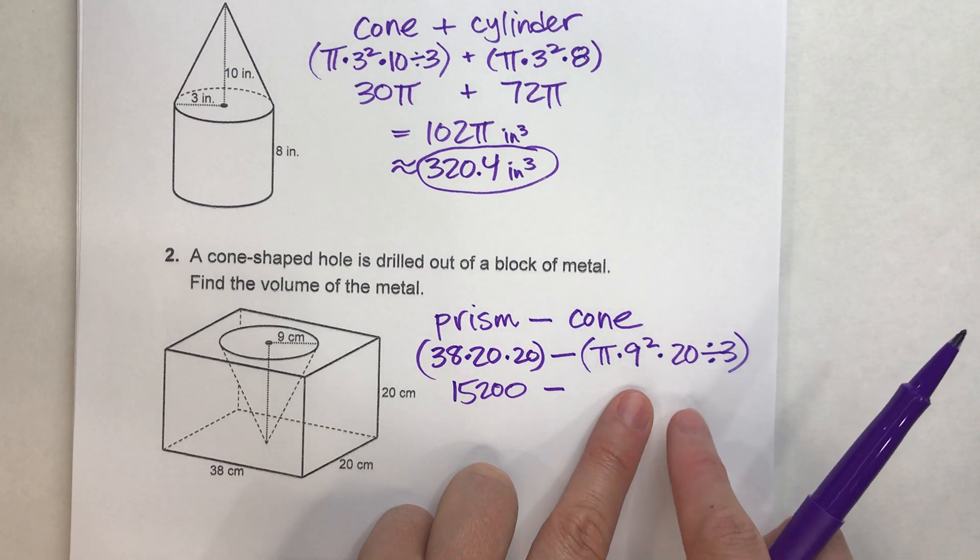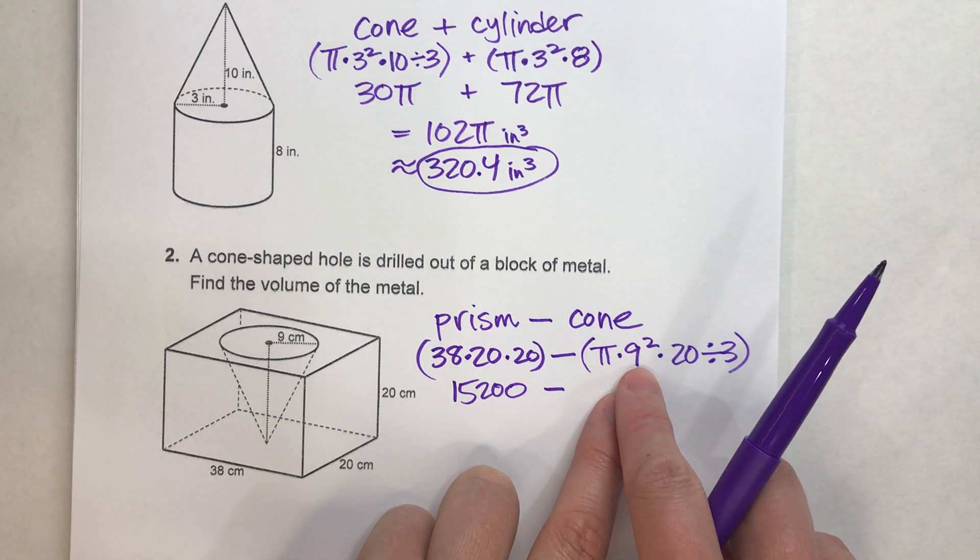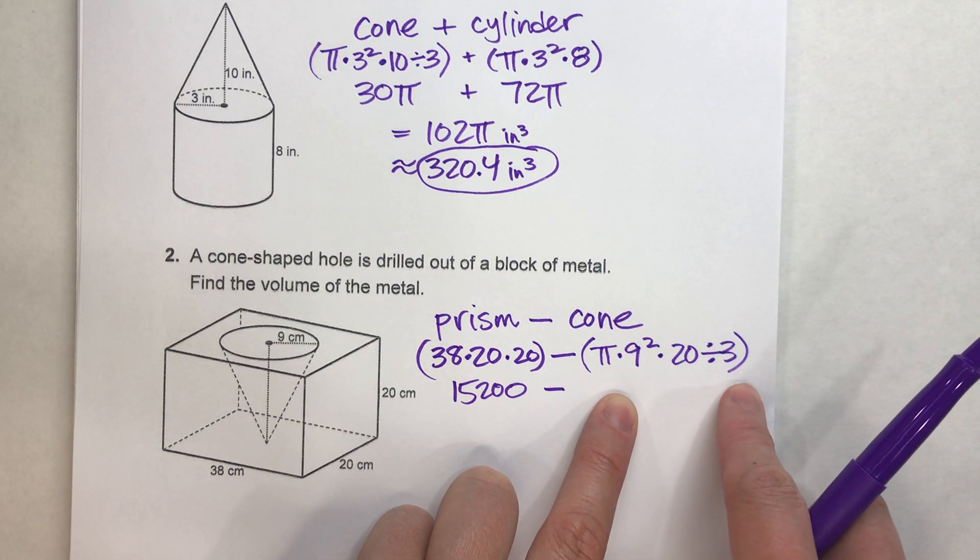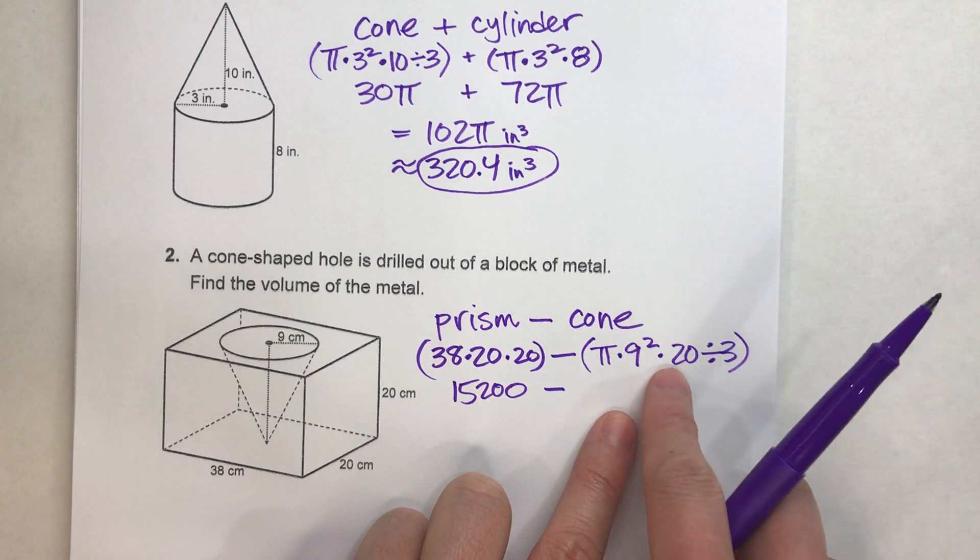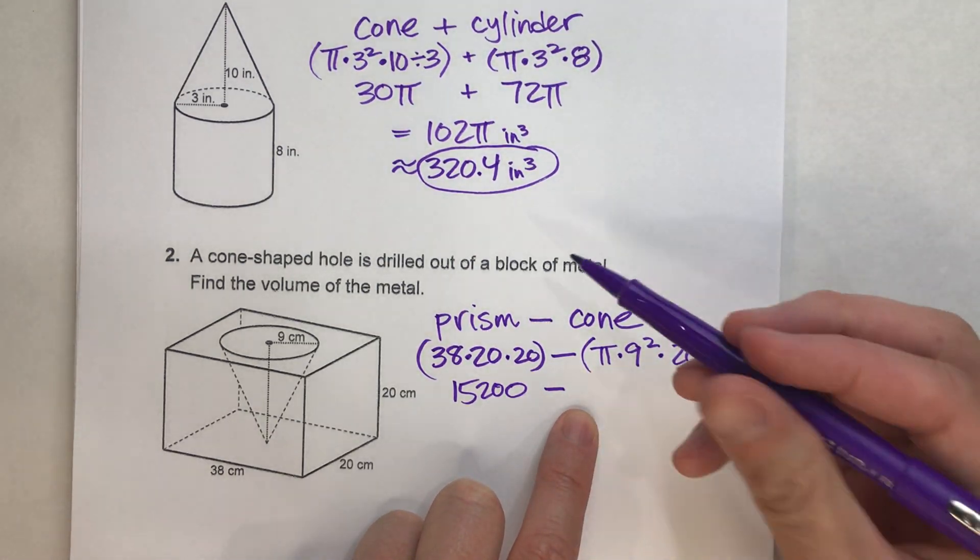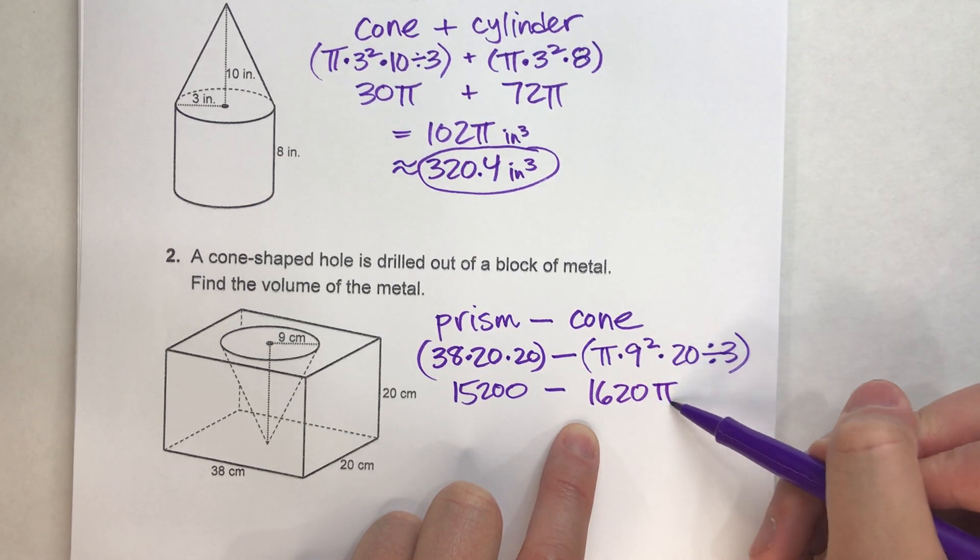On the other side, the cone, we've got 9 squared, which is 81, times 20 divided by 3. So that comes out to 1620, and that's times pi, so this is just 1620 pi.